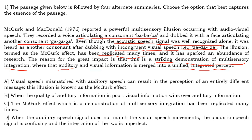Option B: when the quality of auditory information is poor, visual information wins over auditory information. The passage never says the quality of the recorded speech is poor — that is not given. And 'visual information wins over auditory information' implies people understand what is seen in the visual. But the passage says when visual and auditory are combined, the understanding is completely different — neither the visual speech nor the auditory speech. So 'visual information winning' is wrong and not stated in the passage.